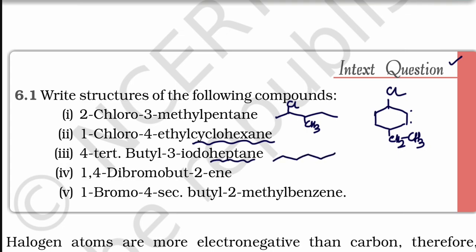Then heptane, you mentioned here third compound. Heptane means you take one, two, three, four, five, six, seven. In that, three iodine, this is iodine. Four tertiary butyl. Tertiary butyl means you take like this.